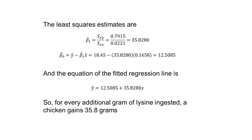Once we have those values, we can plug them in and find out the least squares estimates. Our slope, beta 1 hat, is s sub xy divided by s sub xx. When we do that, we get 35.8280. Our value for the intercept, beta 0 hat, is y bar minus beta 1 hat times x bar. When we use the values that we calculated, we get a y intercept, or beta 0 hat, of 12.5085.